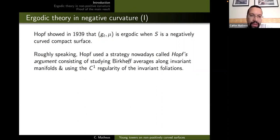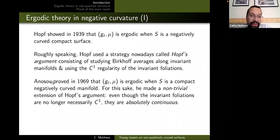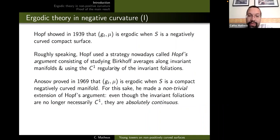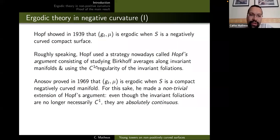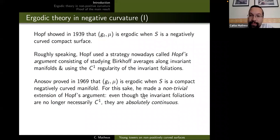This property of having C¹ invariant foliations is very strong, and it was discovered that it almost never works in higher dimensions. Several years later, in his thesis in 1969, it was noticed that to run the second part of the argument you don't need the full strength of C¹ regularity — you just need the foliations to be absolutely continuous. This weaker property luckily holds in our setting thanks to dynamics: the foliations are Hölder plus this extra absolute continuity property, which suffices.